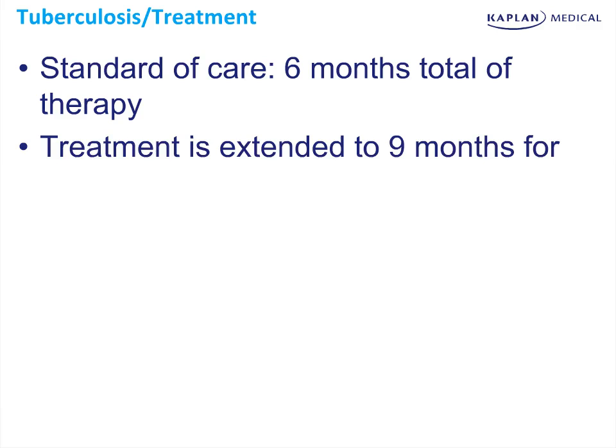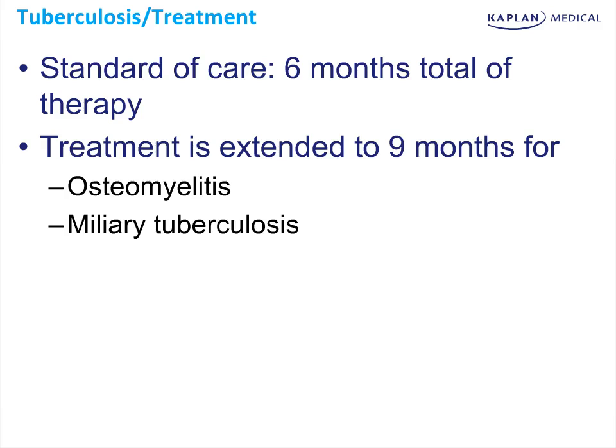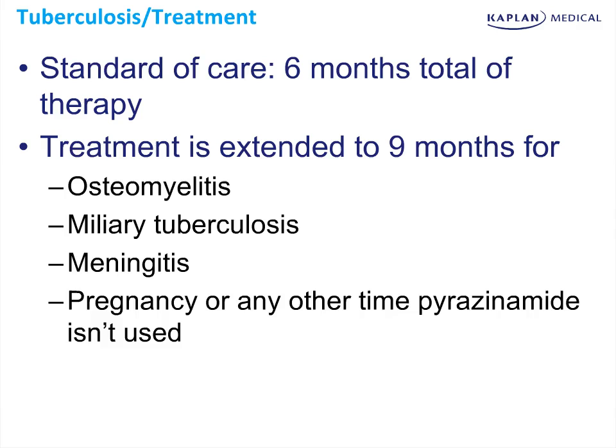Treatment is extended to nine months in the following situations: osteomyelitis, miliary tuberculosis — which is widespread disease at the time of presentation — meningitis, or if there's pregnancy or any other time that pyrazinamide therapy is contraindicated.